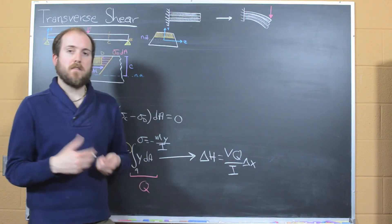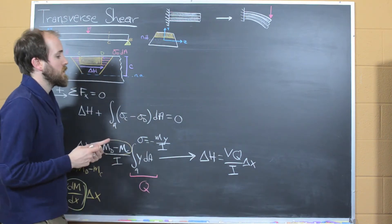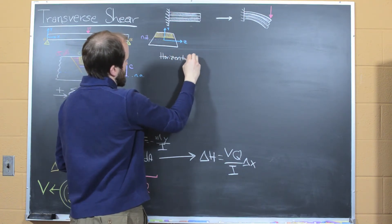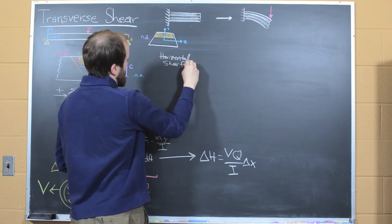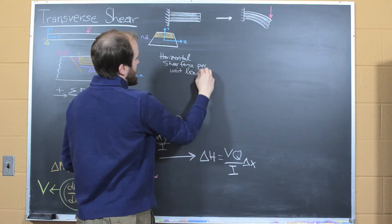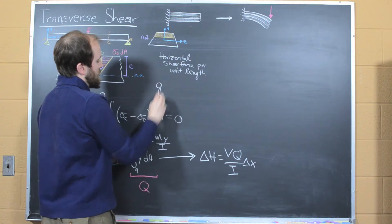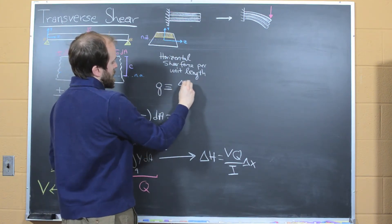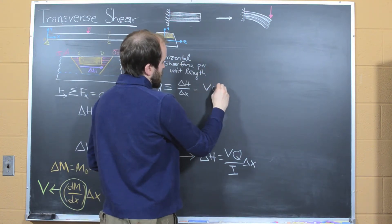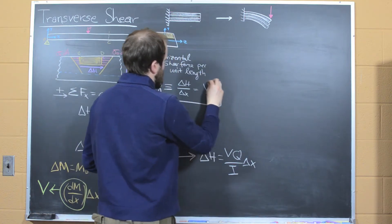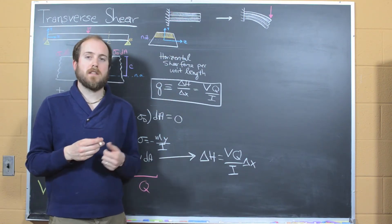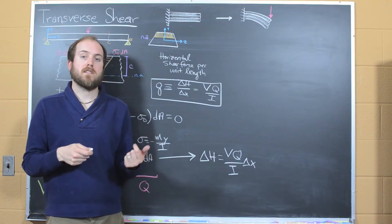And so at this point here we can define a new variable. And the variable that we're going to define is going to be known as the shear force per unit length. So I'm going to write this up here. This horizontal shear force, this is a horizontal shear force per unit length, will be denoted by a lowercase q. And it's going to be defined to equal delta H over delta X. And so it's just going to simply be VQ over I. And so you notice this is a force per unit length.